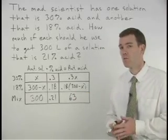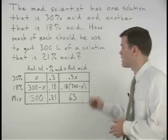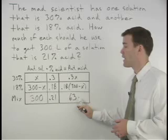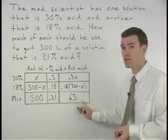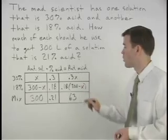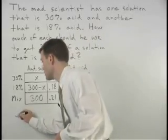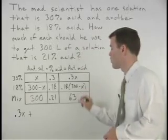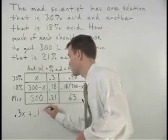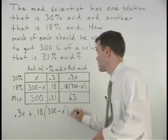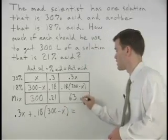For our equation we use the idea that the amount of acid in each of our solutions will add to the amount of acid in our final mixture. So that's 0.3x plus 0.18 times 300 minus x equals 63.